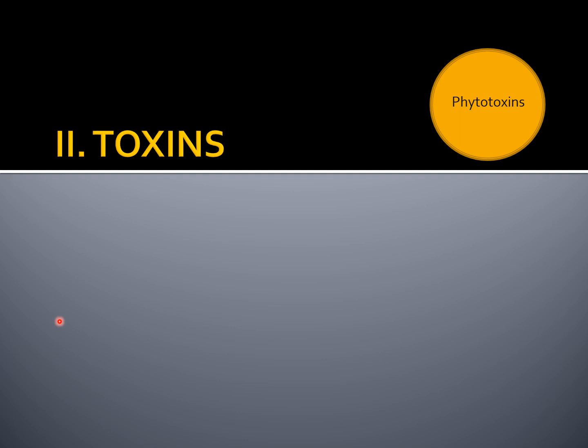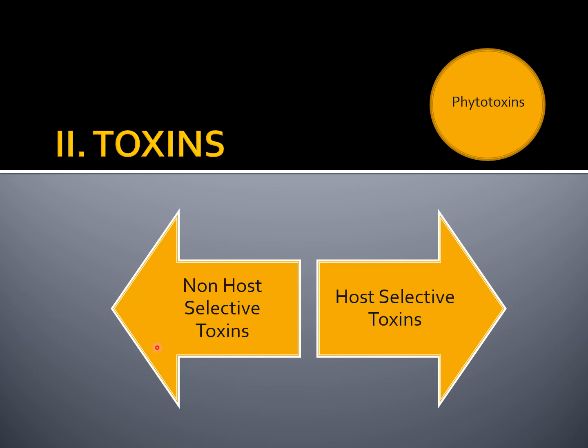All toxins produced by a plant pathogen can be grouped into two classes: non-host selective toxins, also called non-host specific toxins (NST), or host selective toxins, also called host specific toxins. Non-host selective toxins produce symptoms not only on the host but also on other species of plants not normally attacked by the pathogen. These NSTs are not essential to cause the disease in the host, but they increase the extent of disease caused.